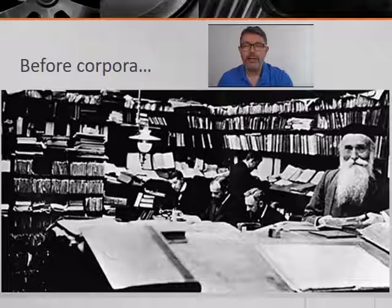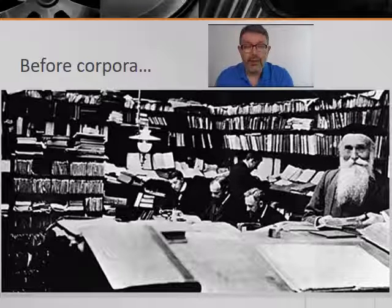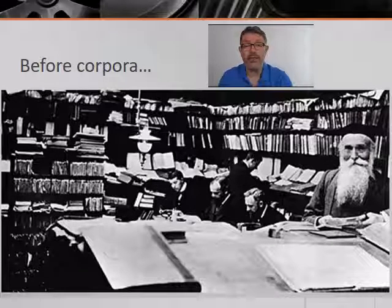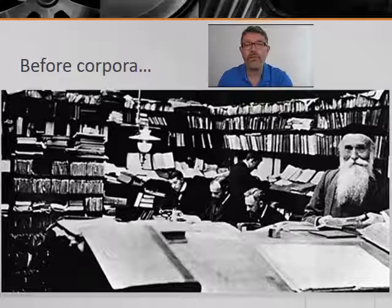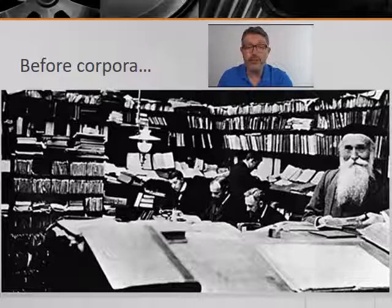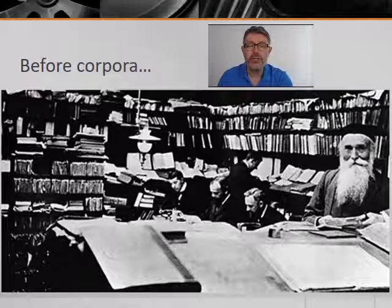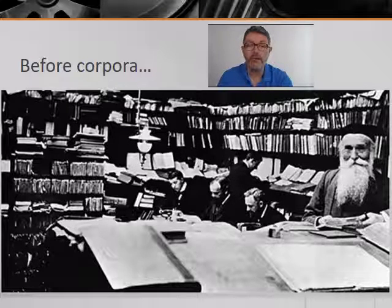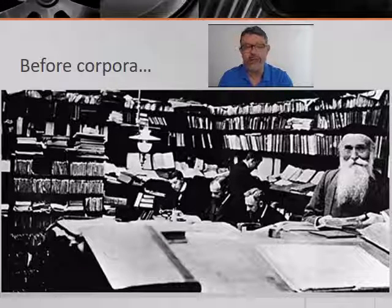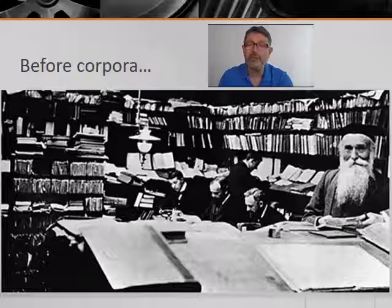Before we launch into this session I want to consider what lexicography was like before corpora. The photograph on this slide is of the early days of the Oxford English Dictionary. In what he called his scriptorium we can see the OED editor James Murray and his assistants. You can't see it, but it's so cold that they have their feet in boxes of straw to keep them warm. They're sifting through slips of paper sent in by a network of volunteers who are reading through a physical corpus of books and noting down interesting words or interesting senses of words. Murray and his assistants are compiling and supplementing this information and putting it into the dictionary.